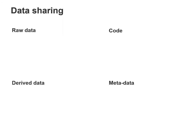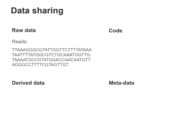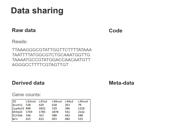For example, for RNA sequencing data, the raw data are reads which are sequences of nucleotides. The derived data can be gene counts which quantify the level of expression of each gene, and the code details all the steps to transform the raw data into derived data. The metadata could contain the date of the experiment, whether the samples were pooled or sequenced separately, and the sequencer used. All these elements help in the analysis and the interpretation.